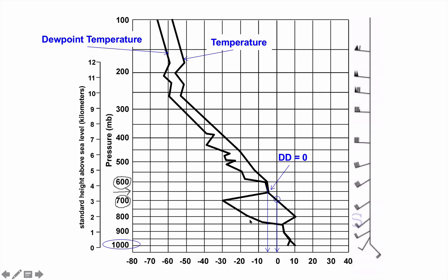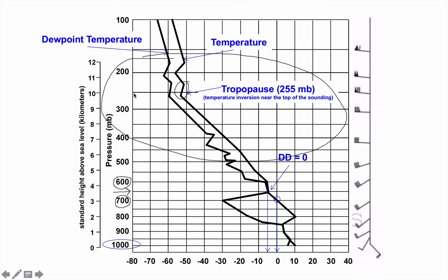Where is the tropopause? Look at the top part of the sounding and find your first temperature inversion — where temperatures warm with height rather than cool. I see it right there. Measuring across, it's at about 255 millibars — just below 250 millibars. That is the pressure at the tropopause. For the fastest wind on the sounding, search for triangles first. I see one wind barb at 60 knots, one at 100 knots, and one at 70 knots — the fastest wind is 100 knots, represented by two triangles.